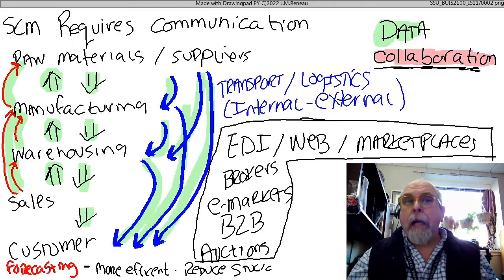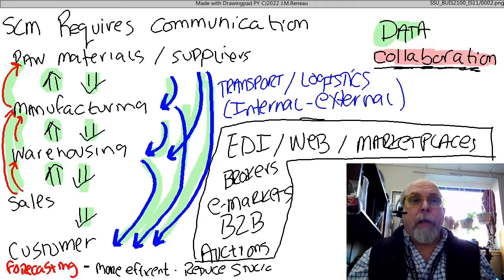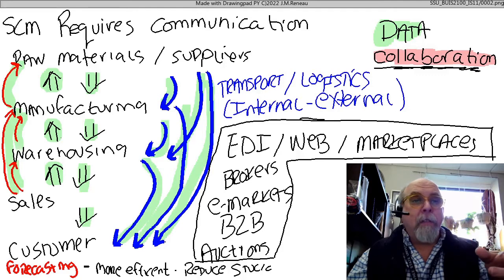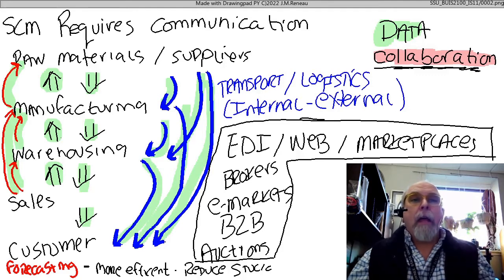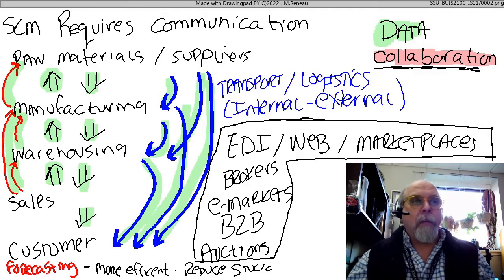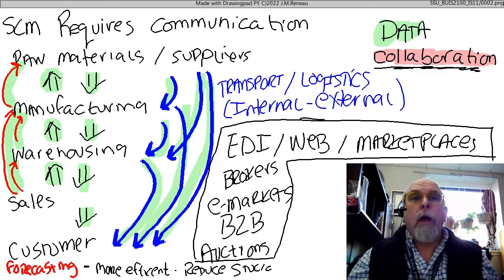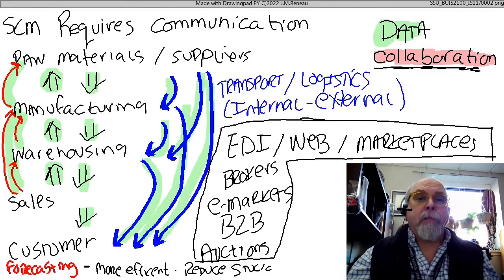This is done using EDI — electronic data interchange. It's done using the web, e-markets and marketplaces, brokers and brokerage companies, business-to-business EDI, online auctions, and the commodities market — so many different ways. Our computer systems and information systems have to keep track of all of this to maximize our sales and make our customers as happy as possible.